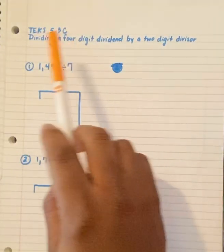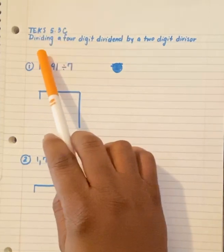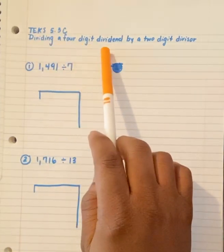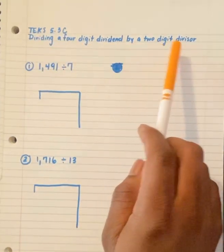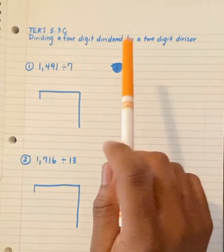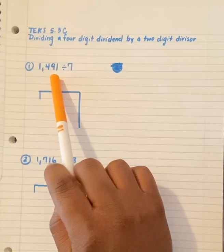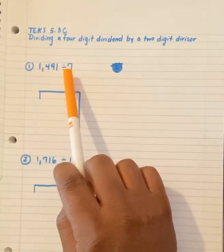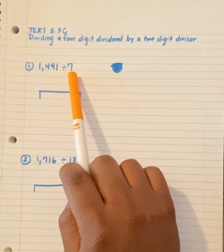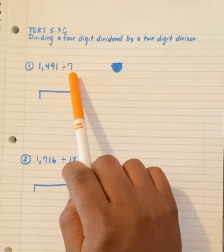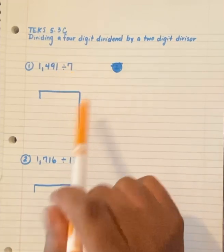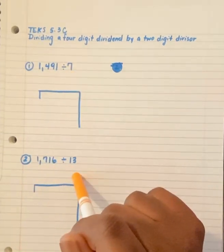Okay, today we're talking about TEKS 5.3C, dividing a four-digit dividend by a two-digit divisor. Let's start with a single-digit divisor, and then we'll move on to number two with a two-digit divisor.